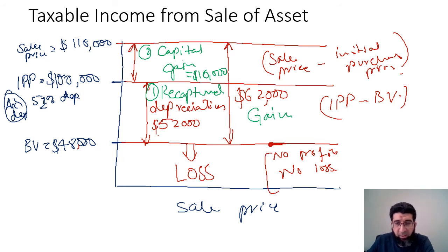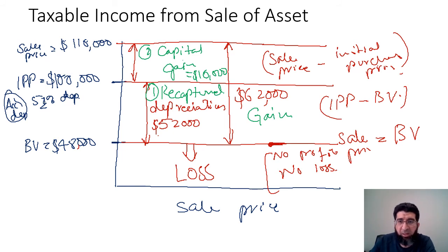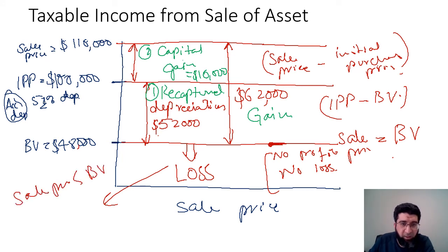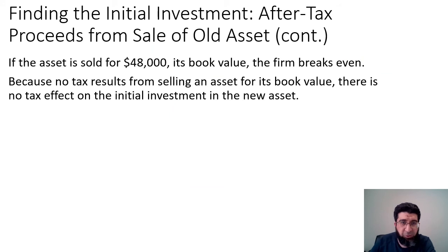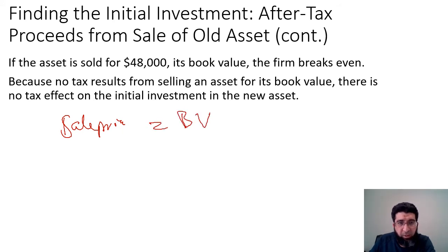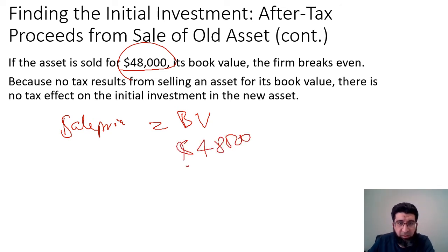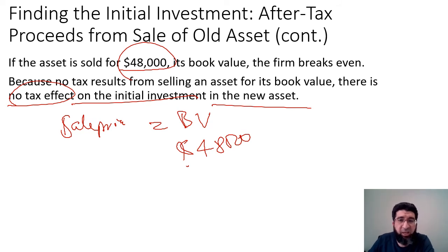When the sale price equals the book value, there is no profit and no loss, and there are no tax effects on the initial investment. If Hi sells the asset for exactly $48,000 — the book value — there is no tax, because neither a gain nor a loss is realized from selling the old asset.